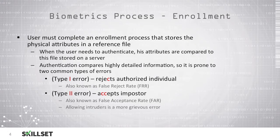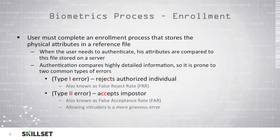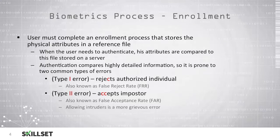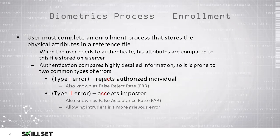This is important to remember for the CISSP examination, because you will most likely see questions that discuss the false accept rate and the false reject rate. One way to remember this is that a type 1 error has one C in the word 'reject', and for a type 2 error, there are two C's in the word 'accept'. You'll also want to remember that the type 2 error is the more egregious error, because we've let an unauthorized person into our system.